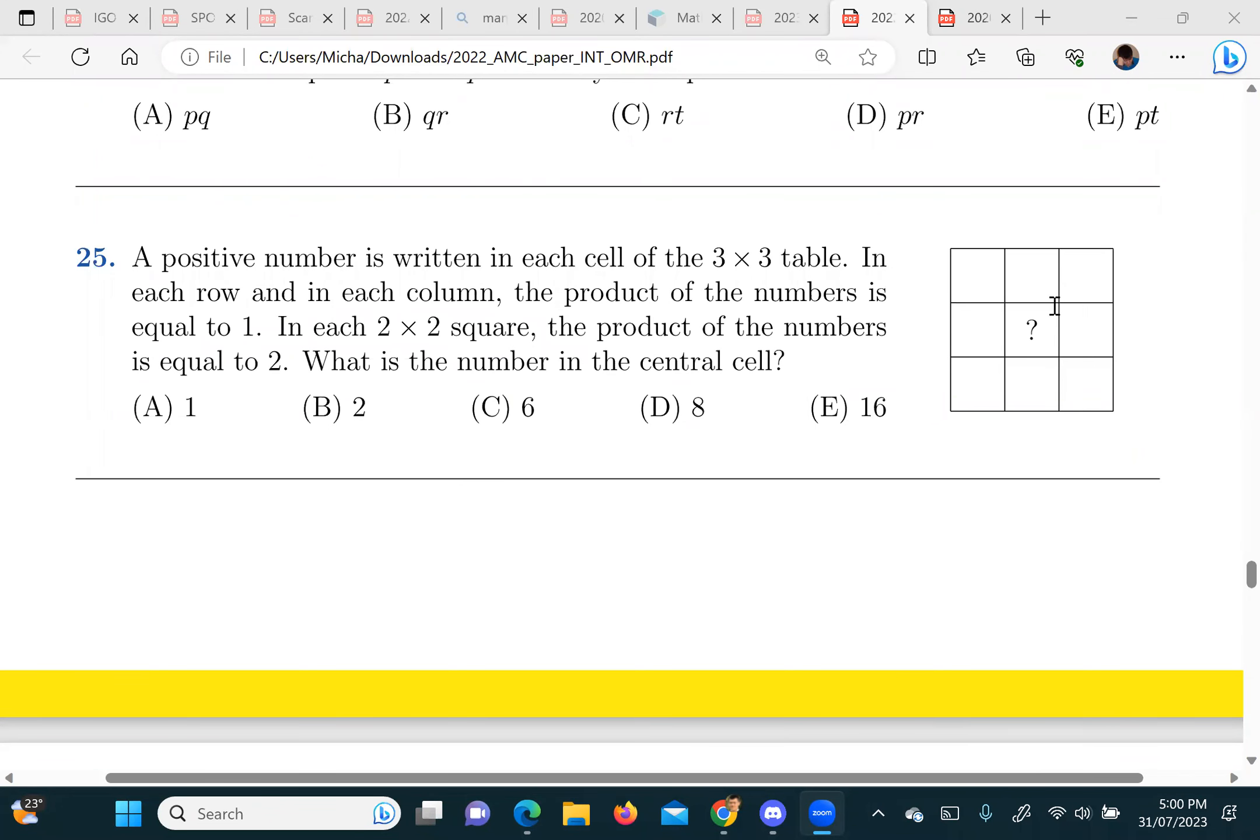Alright, so we got an interesting question because people took a long time on this. Also got to prove Liam wrong that algebra is not the way to go here. Okay, so you have, it's kind of like a magic square but it's products instead of sums and you have this other weird condition that every 2x2 minor thing is also, like a 2x2 square is also products of 2.